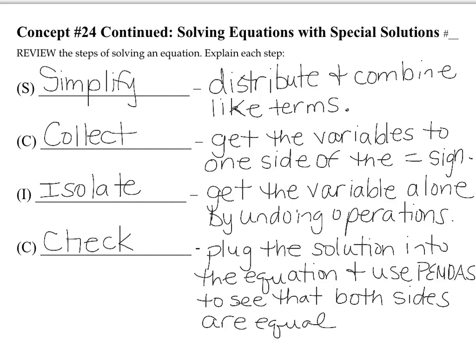Check yourself. SCIC stands for Simplify, Collect, Isolate, and Check. Be sure your definitions are good. Simplify has two steps: distributing and combining like terms. Collecting is getting the variables to one side of the equal sign. Isolate means to get the variable alone by undoing your operations. When you check, you plug the solution into the equation and use PEMDAS or order of operations to see that both sides are equal.